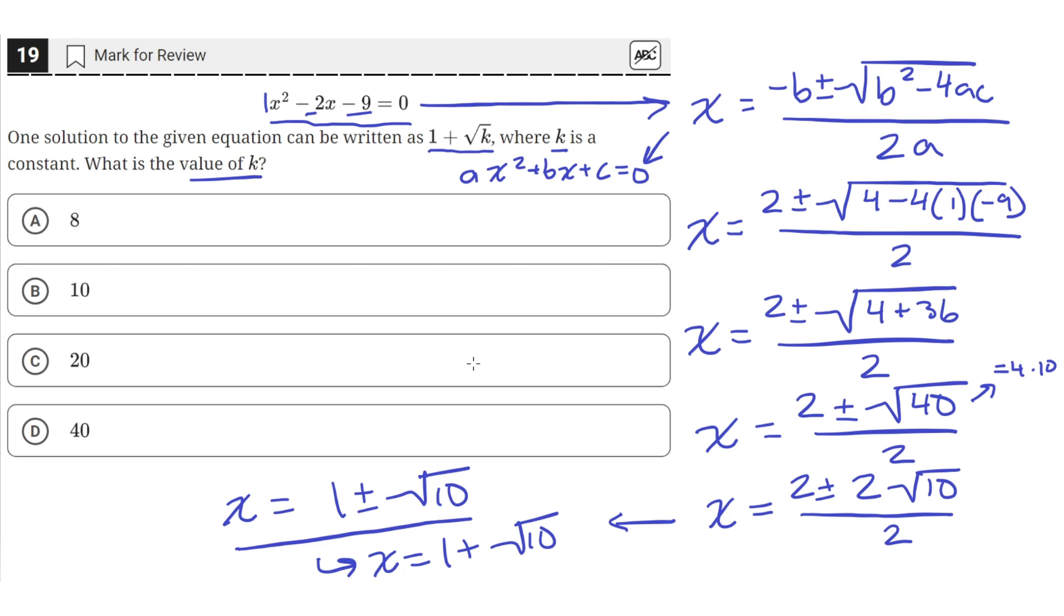There's a negative solution, but the positive solution is the one that's in this form. So we have the 1 and the plus sign and the square root of some constant. So we can easily see that k here is 10, since k is the constant being square rooted. So that means k is equal to 10. So the answer choice that is correct is b.